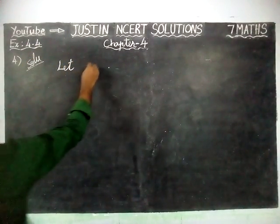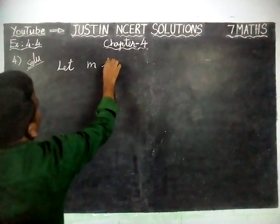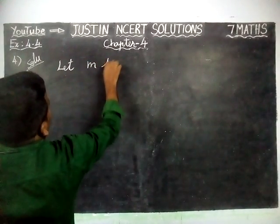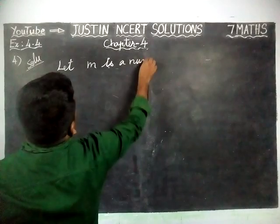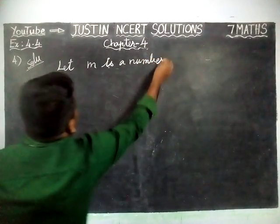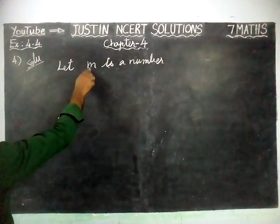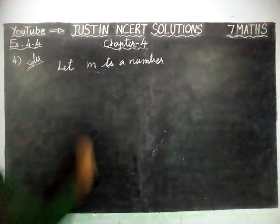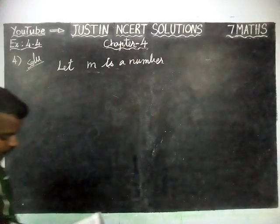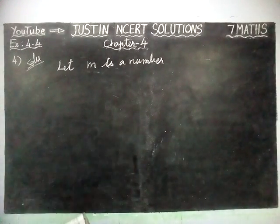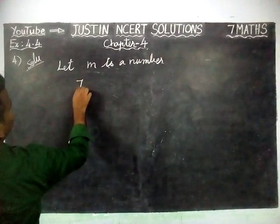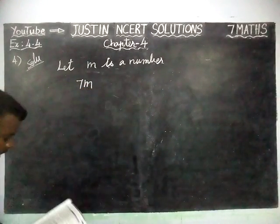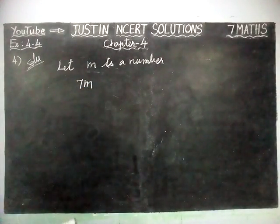Let M be the number. We have taken that number as M and decided the identity is M. Now, 'Take me 7 times over' — so 7 times of M — and add 50.